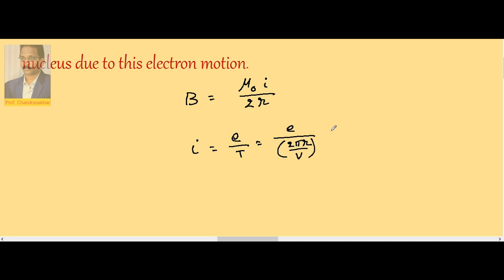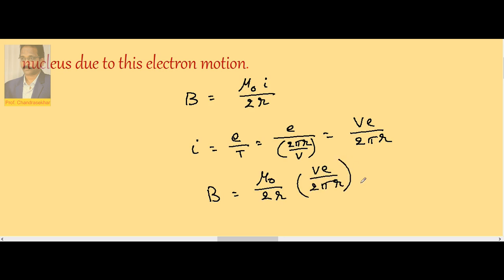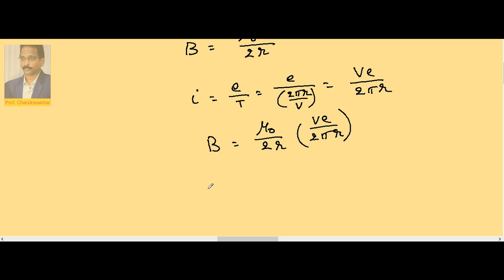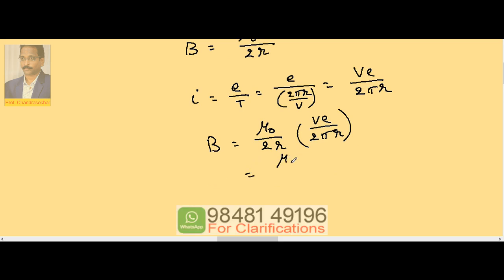Here v is the speed of the electron and r is the radius. Therefore current i becomes ev / 2πr. Now substituting this into the equation for B: B = (μ₀ / 2r) × (ev / 2πr), which gives B = μ₀ × ve / 4πr².